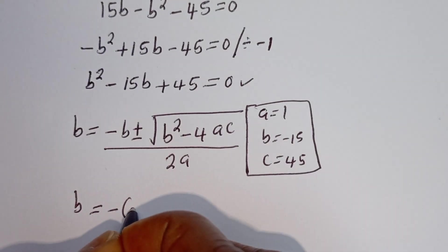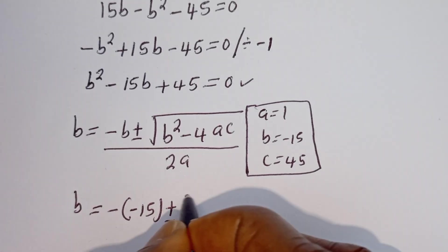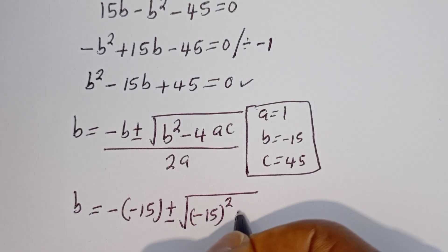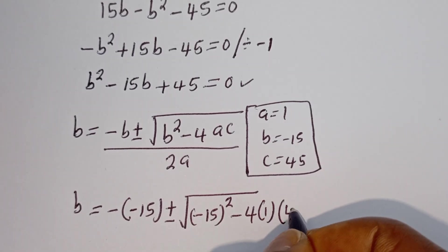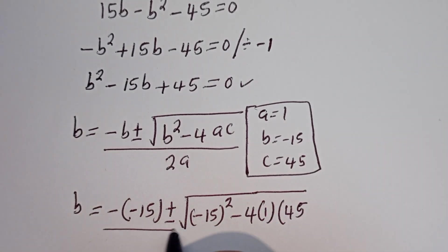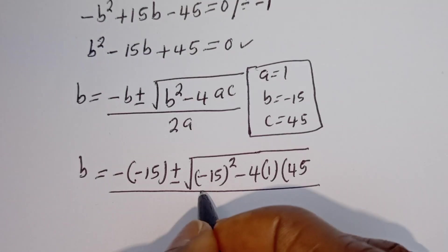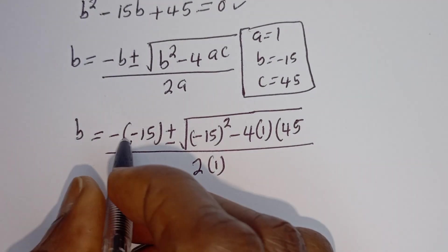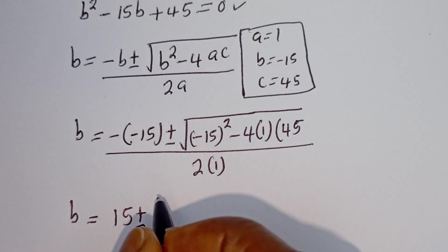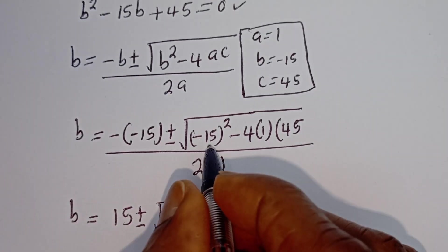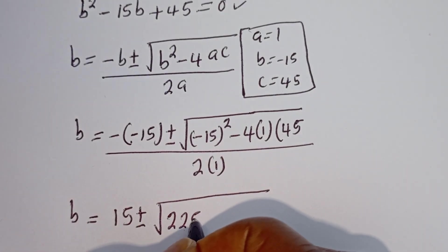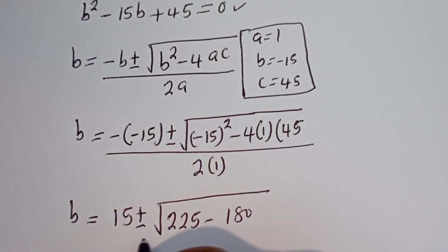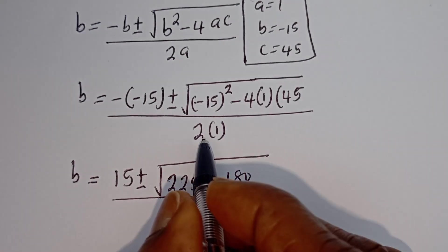B is equal to negative (minus 15), plus or minus square root of (minus 15) squared minus 4 multiplied by 1 multiplied by 45. That gives us: B equals 15 plus or minus square root of 225 minus 180, over 2 multiplied by 1, which is 2.